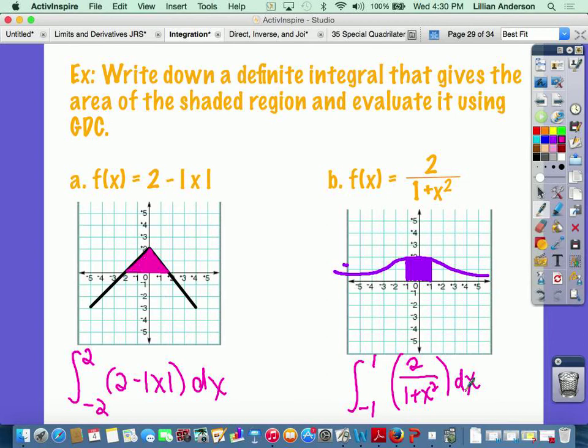But right there, there is the definite integral that gives the area of the shaded region. Lower bound is a, upper bound of b, with the function dx.